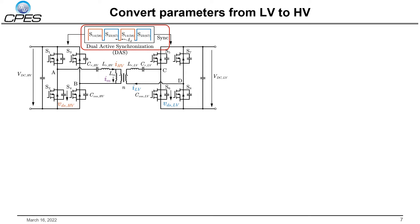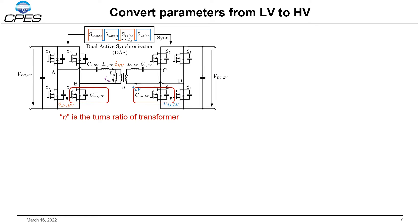With DAS modulation, switches S1, S4, S5, and S8 share the same gate signal. The turns ratio N is selected according to the voltage transformer ratio between the two DC bus voltages VDC-HV and VDC-LV. The device output capacitances of both sides are represented as COSS-HV and COSS-LV. The resonant capacitors CR-HV and CR-LV are selected to achieve the resonant frequency according to the leakage inductances LR-HV and LR-LV.